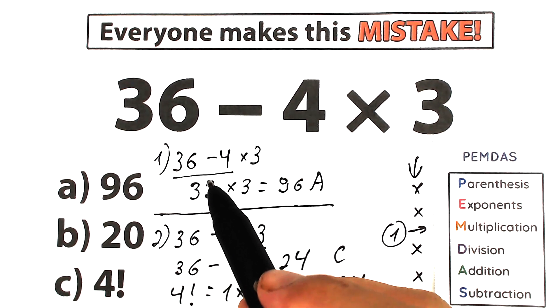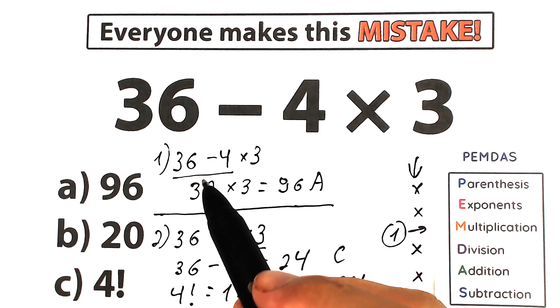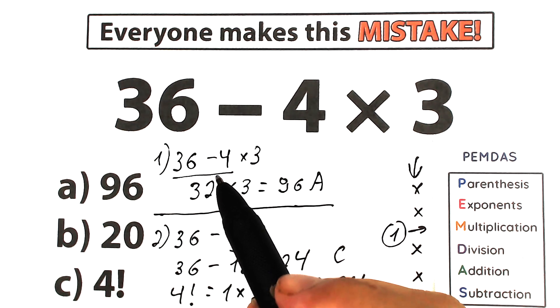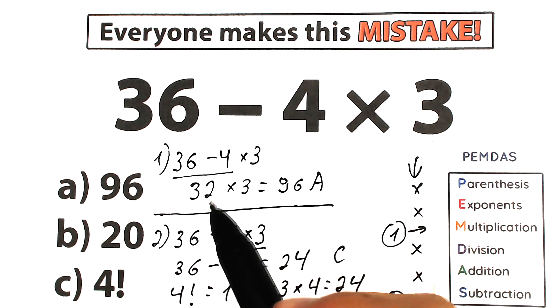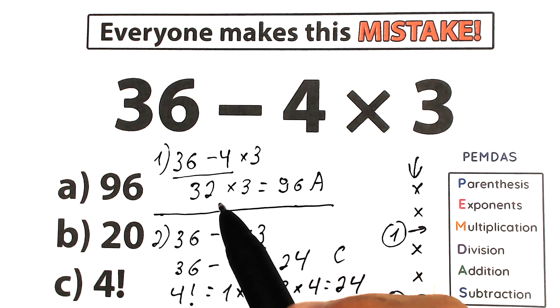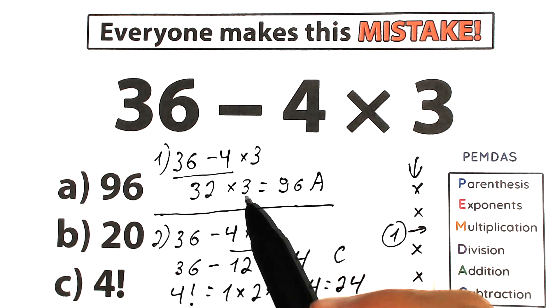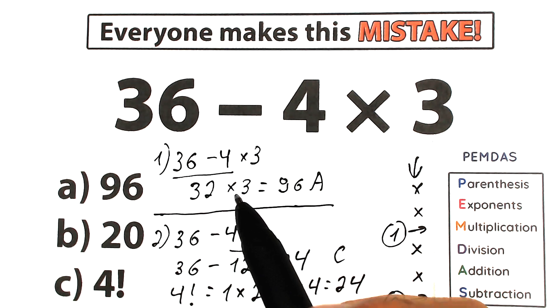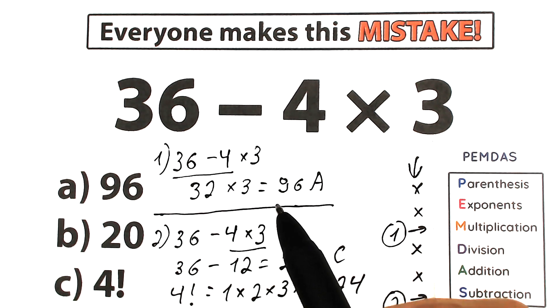In our first interpretation, we solve the challenge absolutely randomly. First we subtract, then we multiply. We do whatever we want. We solve the challenge in a strict order from left to right. We can't do like that guys. This is absolutely wrong, this is absolutely incorrect.